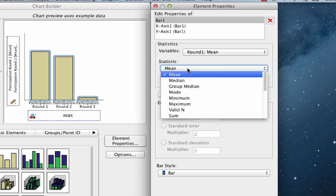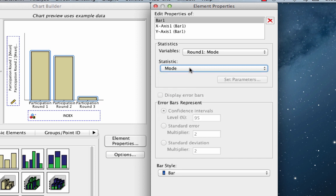If you do not see the mean, you can change it here, but when the mean is selected, then there will be an option for display error bars. Click that box. By default, the confidence interval is set to 95%. Make sure that the bar style is set to bar, and feel free to play around with other settings to see how they change the appearance of the graph.